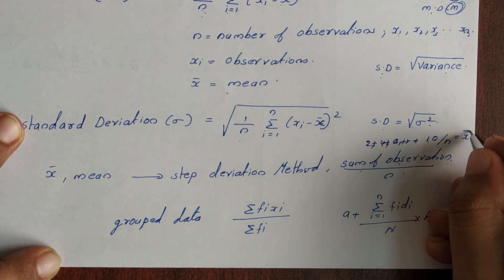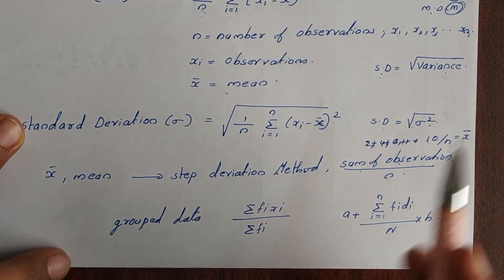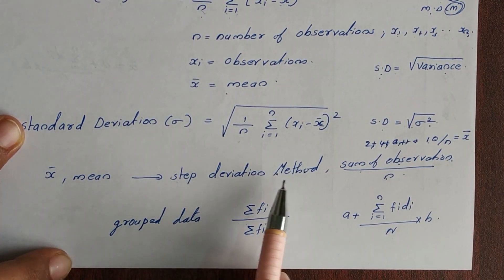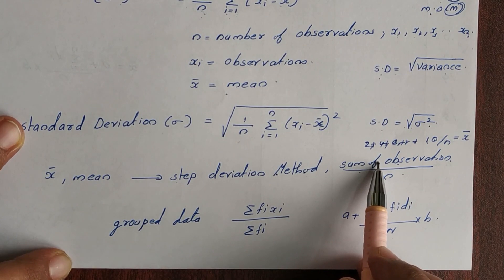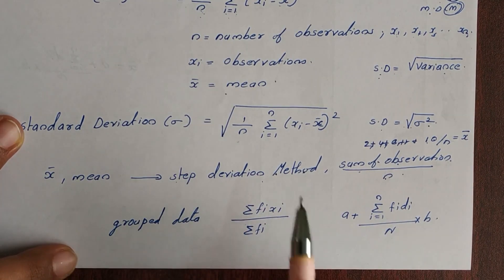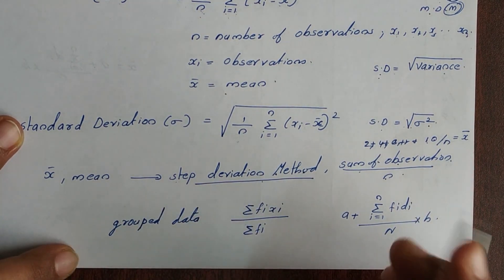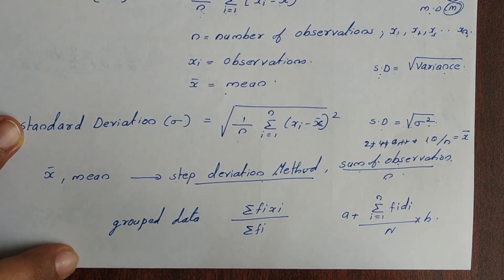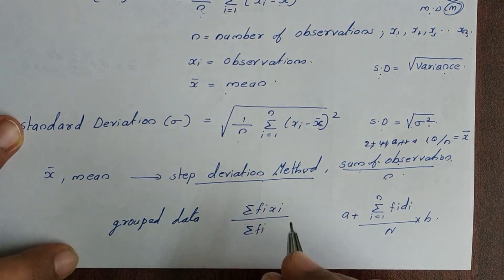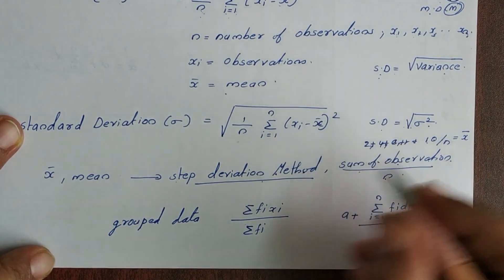We can also find the mean using the step deviation method for ungrouped data. The step deviation method gives an alternative way to compute x bar, using the formula: x bar equals a plus summation of di divided by n, multiplied by h.